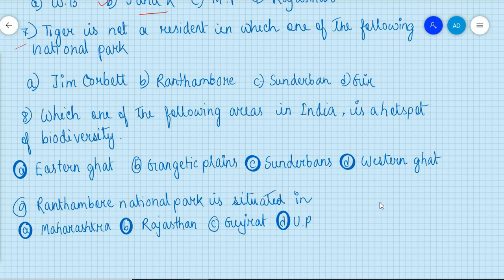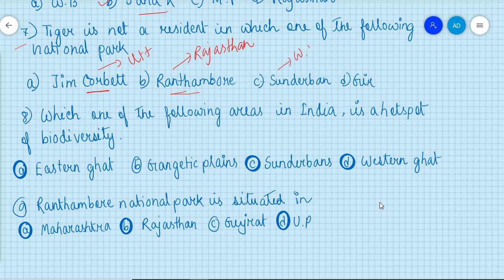The question: Tiger is not a resident in which one of the following national parks? Jim Corbett National Park is famous for tiger. Ranthambore National Park is situated in Rajasthan and is also famous for tiger. Sundarbans in West Bengal is also famous for tiger. But Gir Forest is associated with the conservation of the Asiatic lion — so the correct option is Gir Forest.